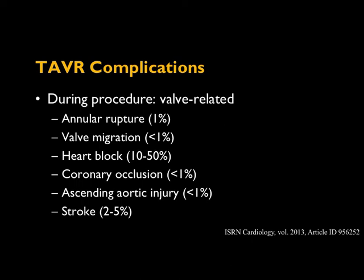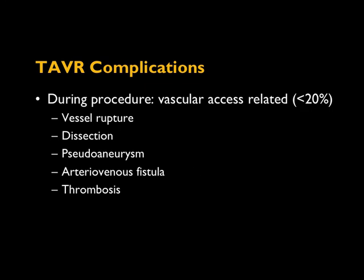Other intraoperative complications include annular rupture, associated with a heavily calcified and stiff annulus where you're forcing a stent — fortunately very rare. Valve migration can occur where the valve doesn't fit properly and migrates; there are case reports of valves ejecting into the ascending aorta or arch. Coronary occlusion is the dreaded complication we perform coronary ostial measurements to prevent — you don't want the device covering the coronary arteries and blocking coronary flow, as this can lead to very poor outcomes.